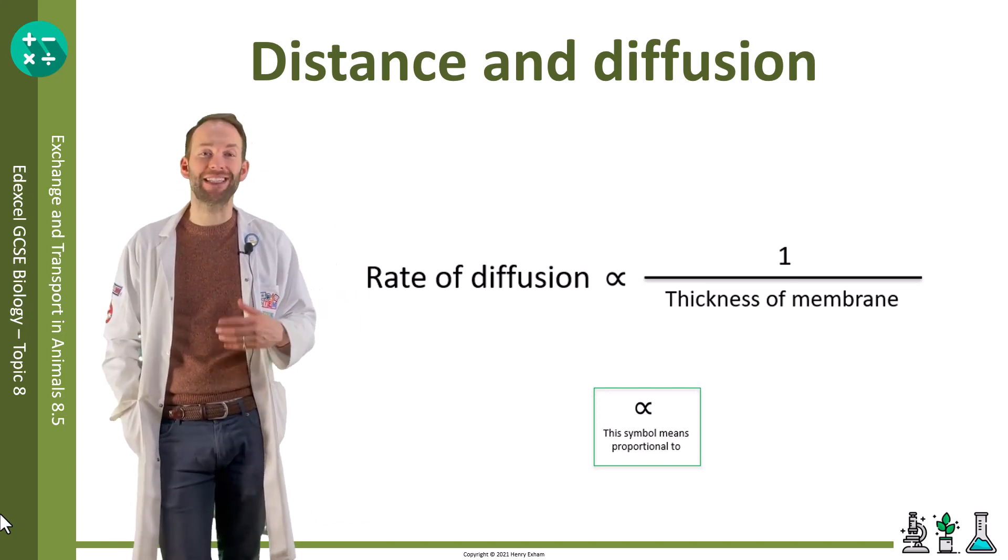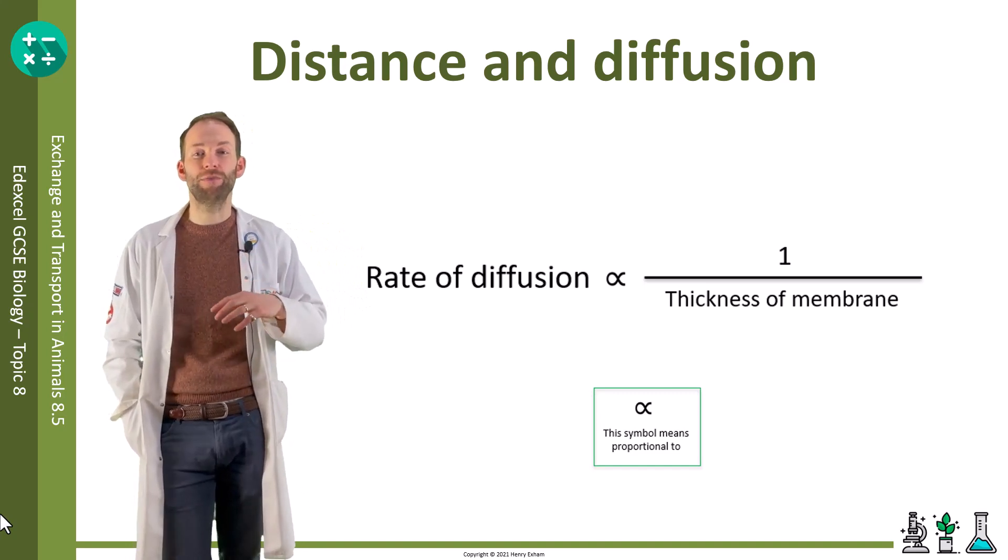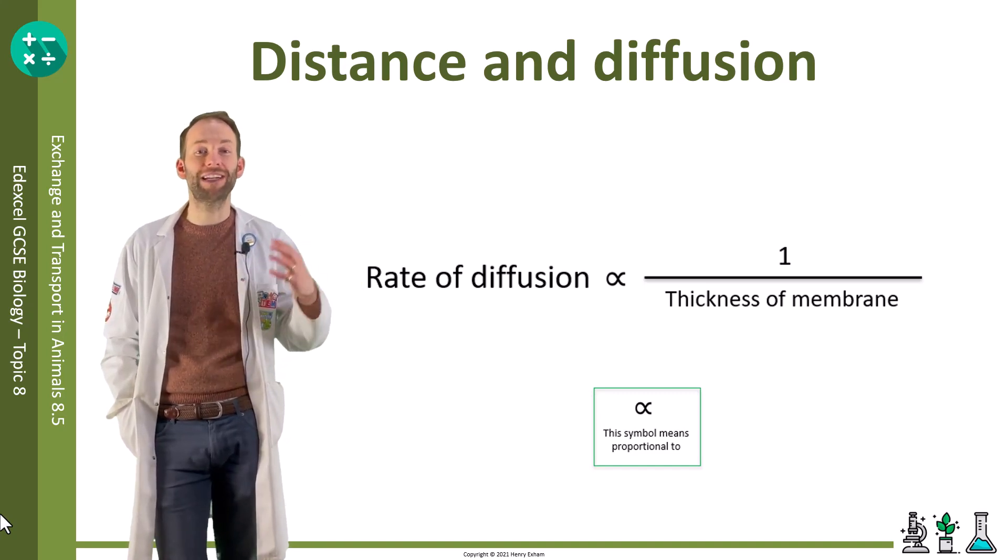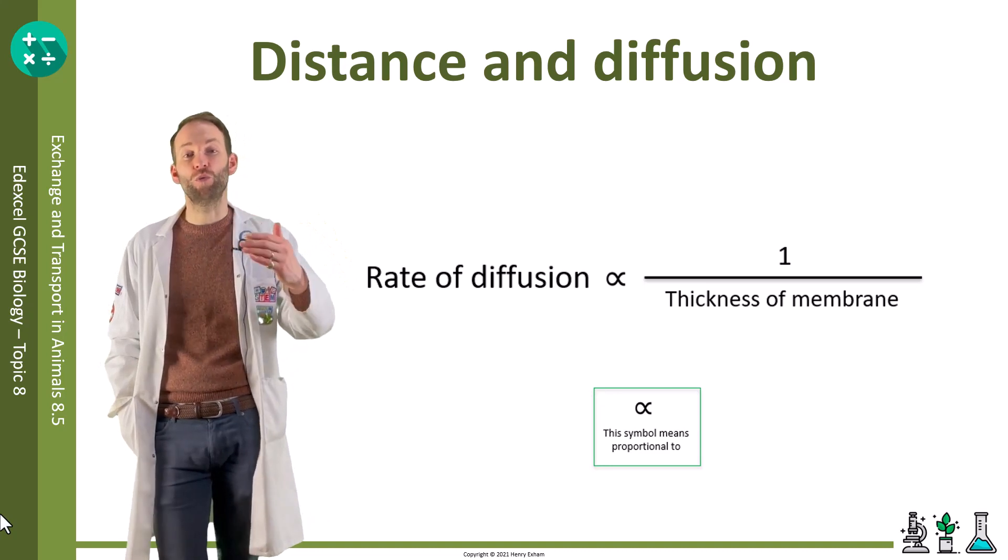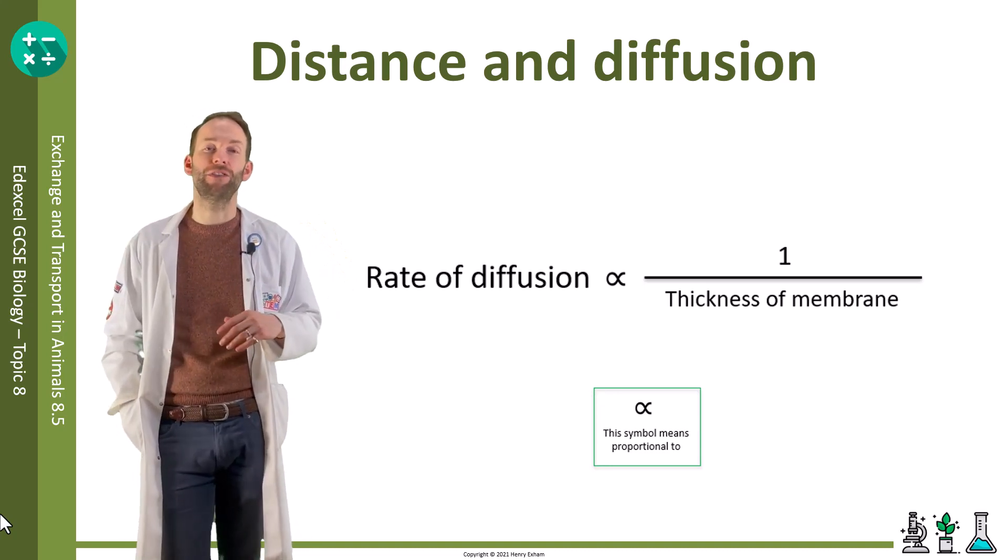We can represent that with this equation here, that little symbol meaning proportional to. So the rate of diffusion is proportional to 1 over the thickness of the membrane.